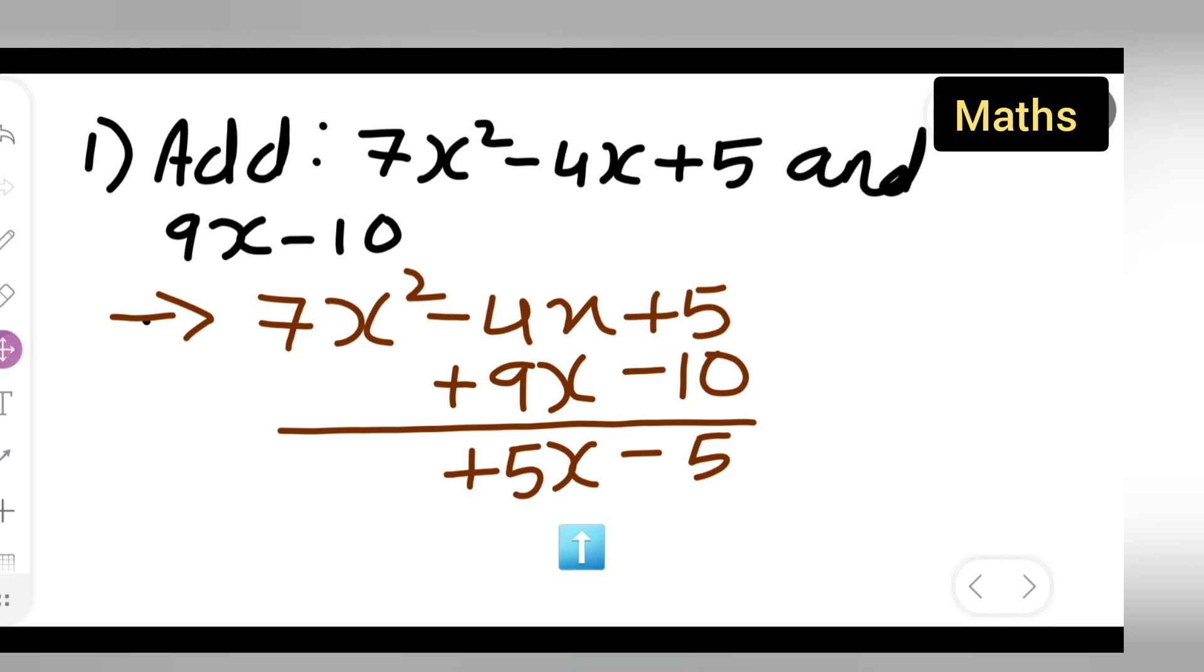After that, you will have to add this number 7x square, write it as it is. 7x square. So the answer is 7x square plus 5x minus 5.